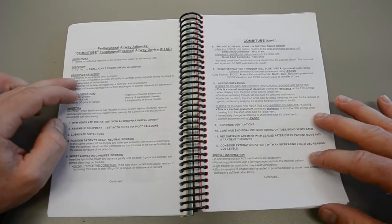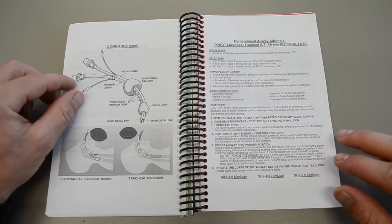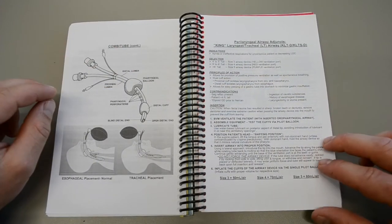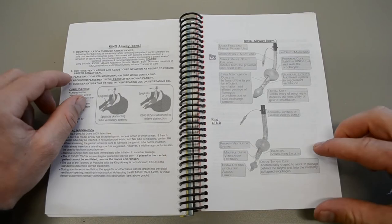Paralaryngeal airway adjunct. I would get familiar with these few pages here. These are the combi tube schematics and the King Airways schematics.